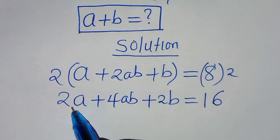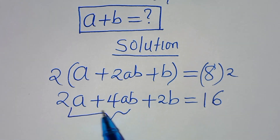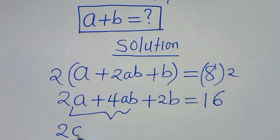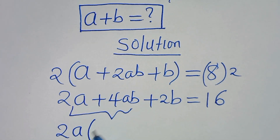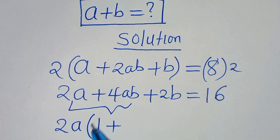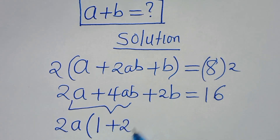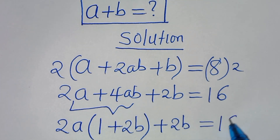From the first part here, we have that 2a is common, so we can factor out 2a. So 2a divided by 2a is 1, then plus 4ab divided by 2a becomes 2b, then plus 2b, and this is equal to 16.